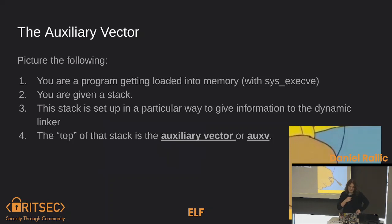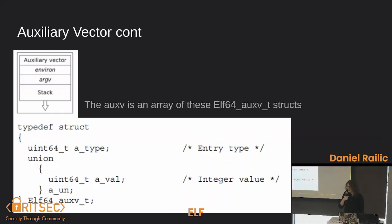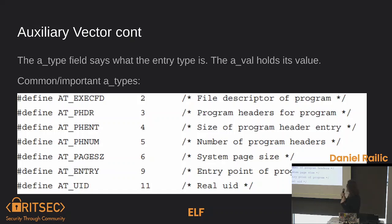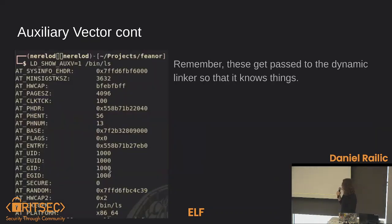The auxiliary vector — picture this: you are a program getting loaded into memory with the execve call. You are given a stack, and that stack is set up in a particular way to give information to the dynamic linker. At the top of that stack is the auxiliary vector, or auxv. It's an array of structs with a type and a value, sitting at the top of that stack. These types get fed into the dynamic linker to help it have the information it needs to link stuff. You can look at what they are by setting the LD_SHOW_AUXV environment variable to one — I did it for ls and you can see the auxiliary vector for it.